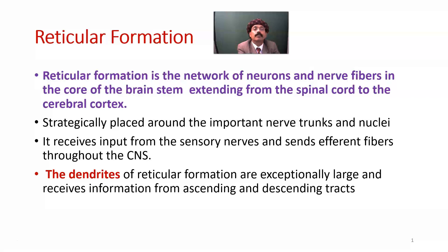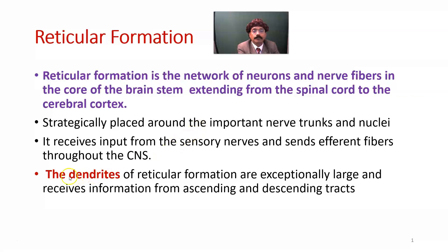Reticular formation is the network of neurons and nerve fibers in the core of the brainstem, extending from the spinal cord to the cerebral cortex. It is strategically placed around important nerve trunks and nuclei, such as the respiratory center located in the medulla oblongata, and the entire brainstem comprising midbrain, pons, and medulla oblongata — the site of many cranial nerve nuclei. So reticular formation is placed in a strategically important place.